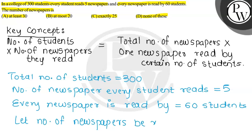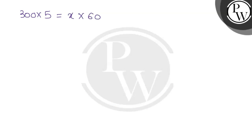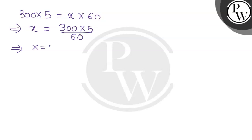According to our key concept: 300 into 5 will be equal to x into 60. Solving this, x is equal to 300 × 5 divided by 60, which is equal to x = 25. So x is equal to 25 is our final answer.